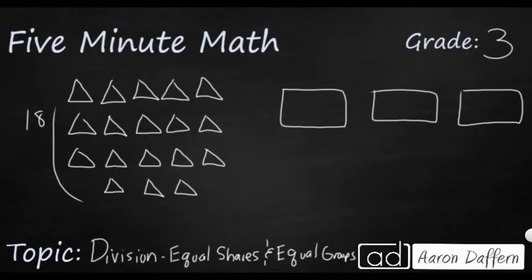So that is going to be an example of equal shares, because I know there's going to be three groups or three boxes. I just don't know how many of these triangles or how many of these shares go into each of the boxes. So there's a few different ways to solve this, and I want to show all of them to you.